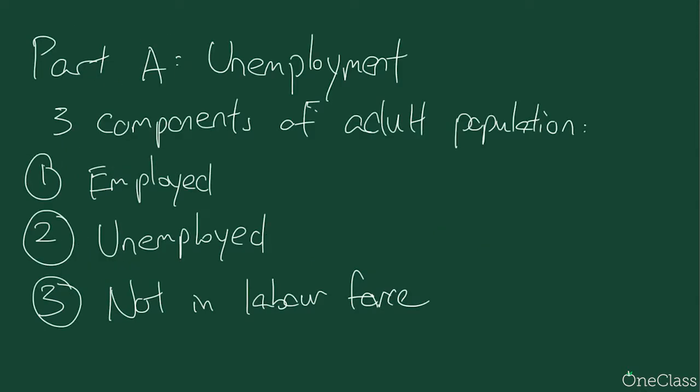In part A of topic 1, we'll be dealing with unemployment. Unemployment occurs when people are out of work and are actively seeking one. A high unemployment rate hurts the economy of a country because it causes a waste of scarce economic resources and reduces the long-run growth potential of the economy. An economy with a high unemployment rate is producing within its production possibility frontier.